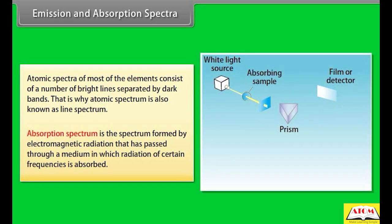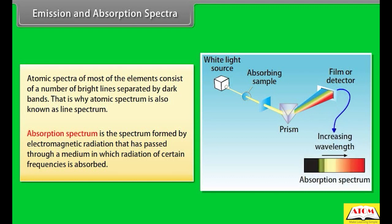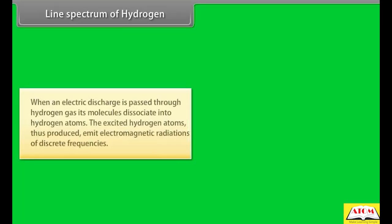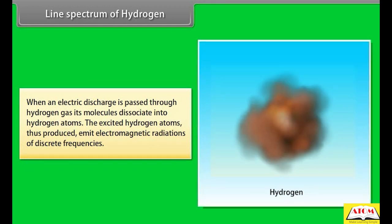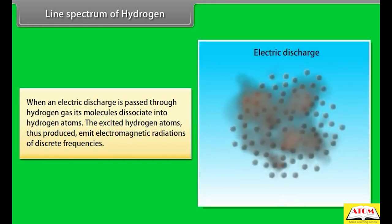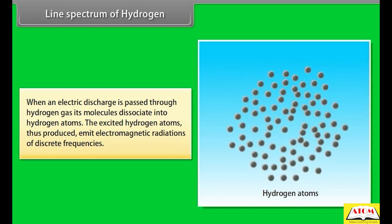Absorption spectrum is the spectrum formed by electromagnetic radiation that has passed through a medium in which radiation of certain frequencies is absorbed. When an electric discharge is passed through hydrogen gas, its molecules dissociate into hydrogen atoms. The excited hydrogen atoms thus produced emit electromagnetic radiations of discrete frequencies.